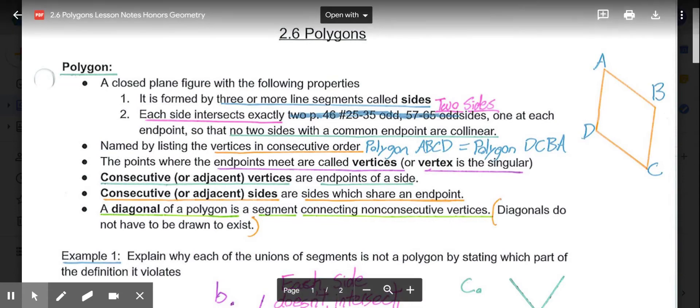Then, we want to look at what we do with polygons in geometry. The first thing is, we name them by listing the vertices in consecutive order. So the polygon over here could be named A, B, C, D, could be named D, C, B, A, as long as you're going around it in consecutive order.